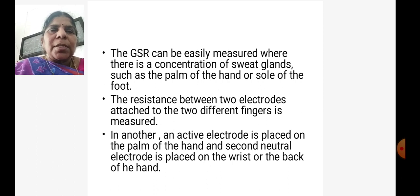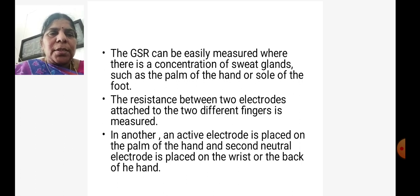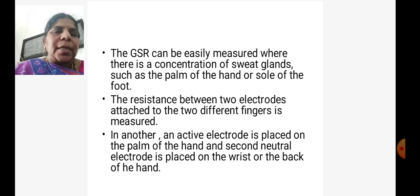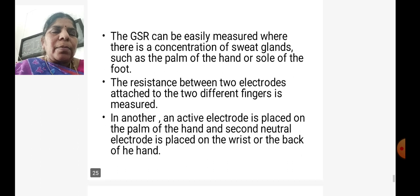GSR can be easily measured where there is a concentration of sweat glands, such as the palm of the hand or sole of the foot. The resistance between two electrodes attached to two different fingers is measured. Alternatively, an active electrode is placed on the palm of the hand and a second neutral electrode is placed on the wrist or the back of the hand.